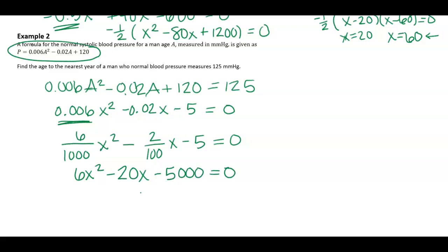I can now search for 2 numbers that multiply to, what is 6 times 5,000? 30,000, negative 30,000, and add to negative 20. However, if I try to do that, I kind of spend some time trying to figure those out. So instead, I think I want to use the quadratic formula.